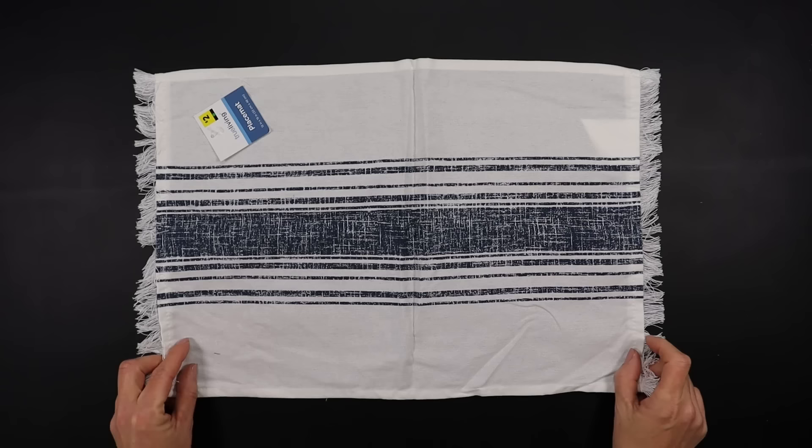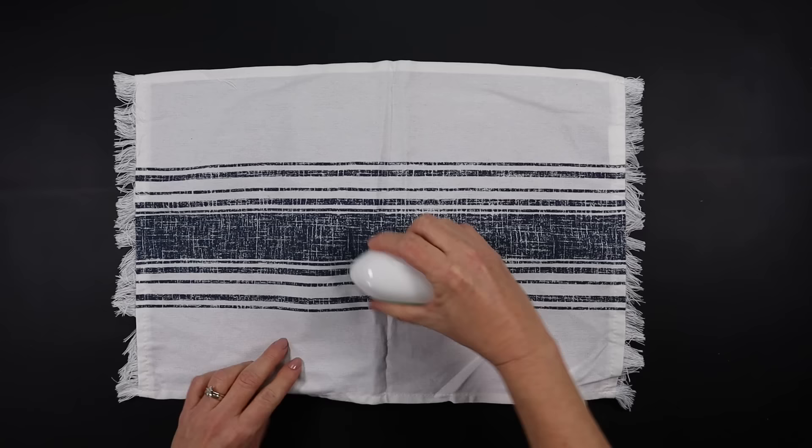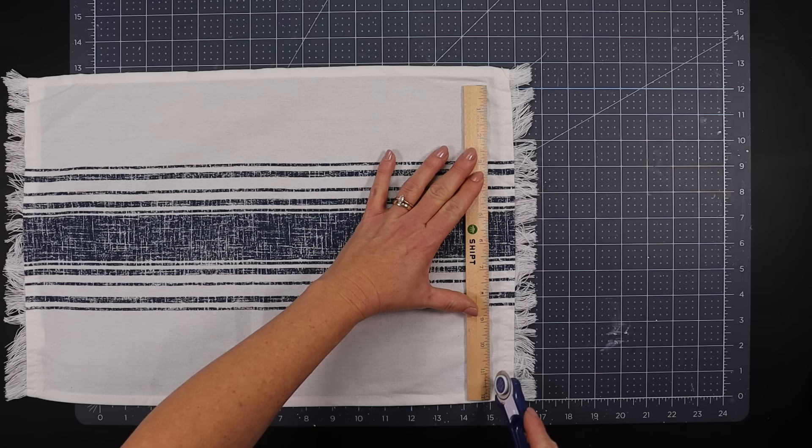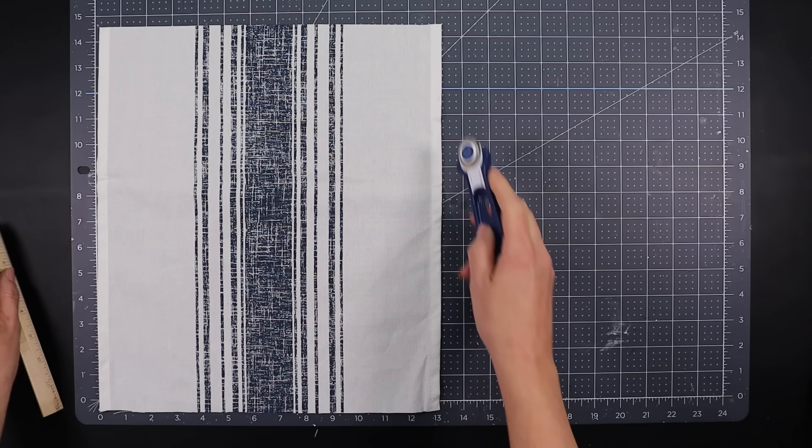I found a beautiful placemat at Dollar General for $2. I absolutely love the design on this and think it would be perfect for this tray. I'm going to iron most of the creases and wrinkles out, and then I'm going to take one of Dollar Tree's rotary blades and trim the ends off a little bit longer than the inside bottom of the tray. Then I'll cut the sides down using this same rotary blade.